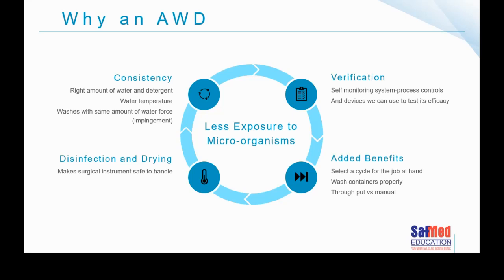At the end of the cycle, your instruments should be coming out of the washer disinfector dried — assuming you haven't adjusted the cycle parameters. When the installation happens, we sometimes say it can't take 55 minutes, it must come out much faster. Then we adjust the parameters, which is really not a good thing. The whole idea is to make these instruments safe for us to handle while preparing sets. We want to disinfect them so they are safe for us — and this disinfection cycle and process will kill COVID-19.